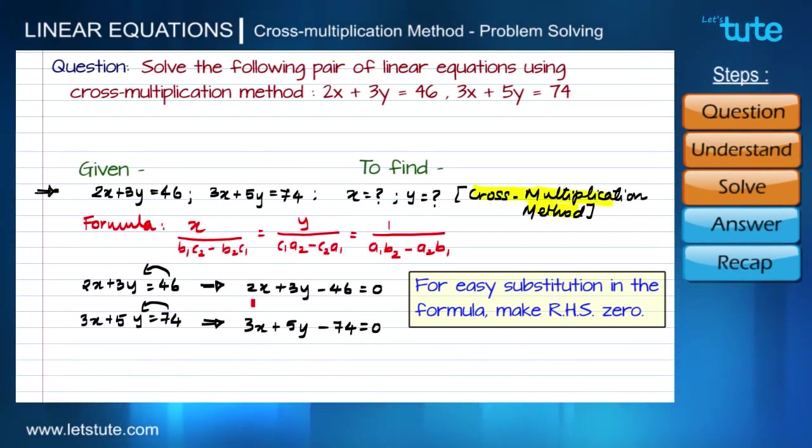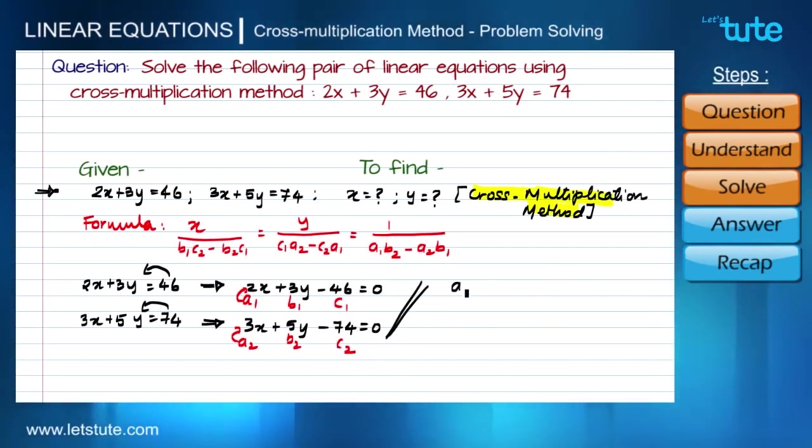For using the formula, we have to consider a1, a2, b1, b2, and c1, c2. For coefficients of x we give name as a1 and a2: a1 for 2 and a2 for 3. Similarly, for coefficients of y we give name as b1 and b2. Similarly for constants, c1 and c2. Let us list out the values for a1, a2, b1, b2, and c1, c2.